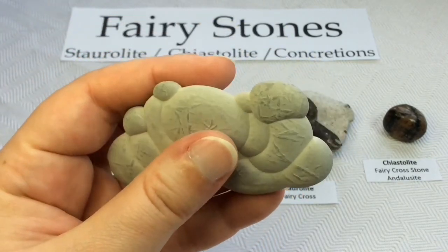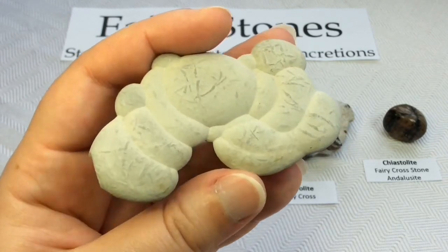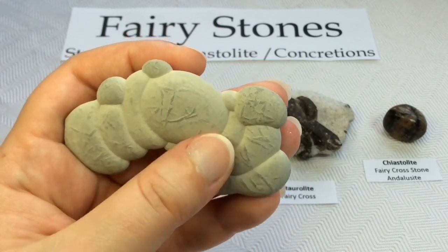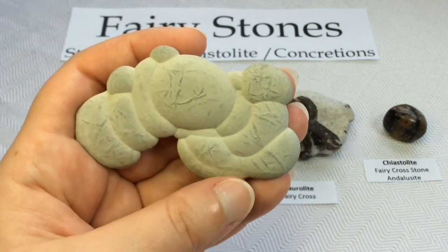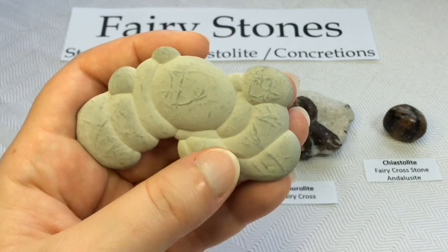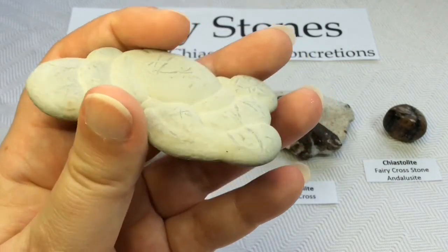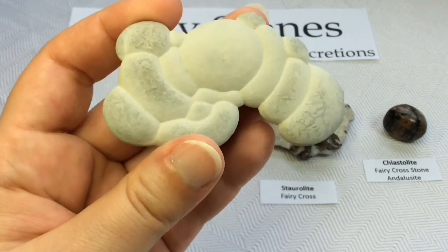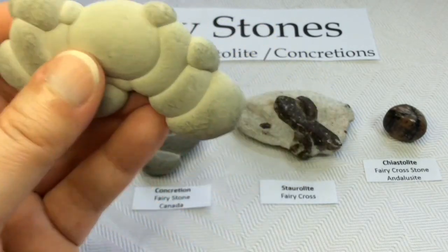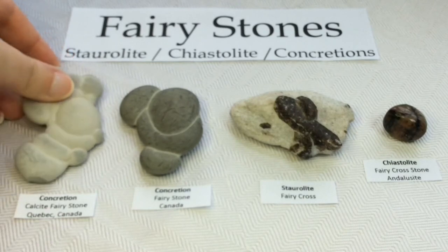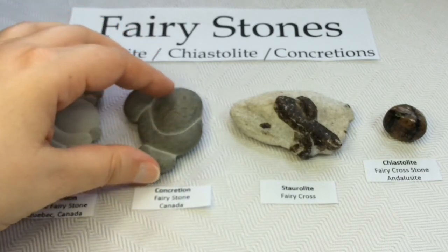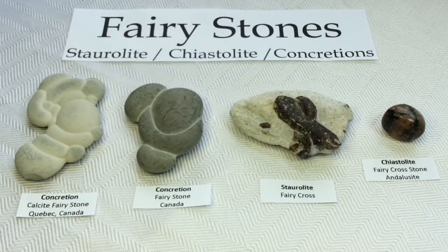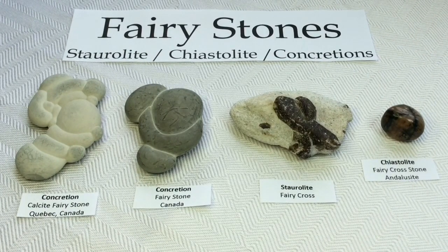You'll often see some concretions labeled as goddess stones, and they typically do look like beautiful, robust women — that typical shape of the beautiful goddess. But these ones don't necessarily line up in that same way. I like the term fairy stone, and goddess stone too, but hey, fairies are fun.